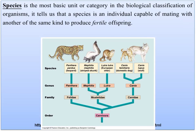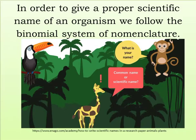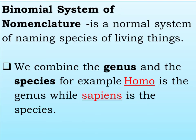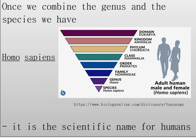Species is the most basic unit or category in biological classification. A species is an individual capable of mating with another of the same kind to produce fertile offspring. In order to give a proper scientific name to an organism, we follow the binomial system of nomenclature, which combines the genus and the species. For example, Homo is the genus while sapiens is the species — combined, Homo sapiens is the scientific name for humans.